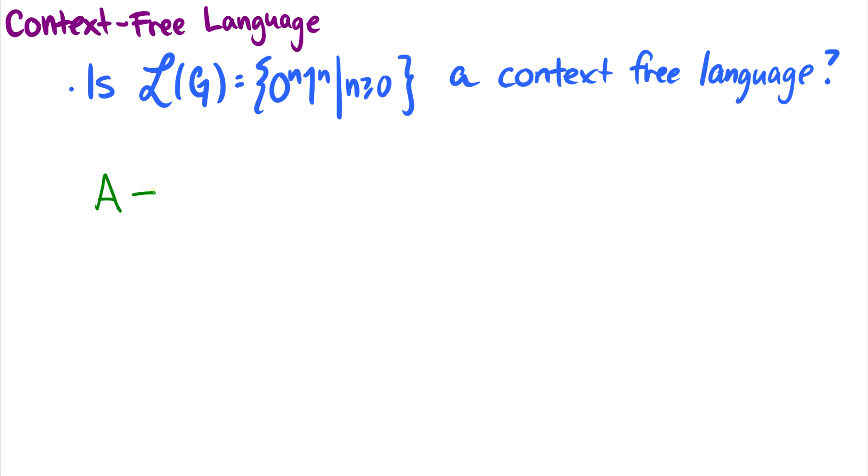So there's really just one rule we need here, and that is that A, which we'll call A as our start variable, but we can have a rule that goes from S to A to start ourselves off. We'll have A go to 0A1, and then we'll have a terminating symbol, A goes to lambda.